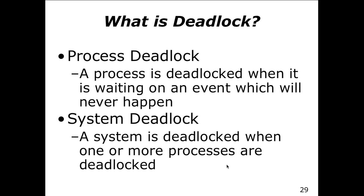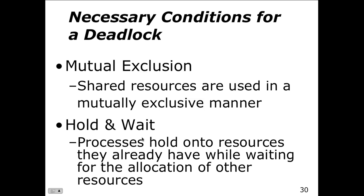Going back to the concept of process deadlock versus system deadlock — two different concepts. A process is deadlocked when it's waiting on an event that will never happen. The system is deadlocked when one or more processes are deadlocked. If we have one or more processes deadlocked, it doesn't necessarily create a full system deadlock, but it creates system issues because CPU time is being allocated to processes that aren't running.